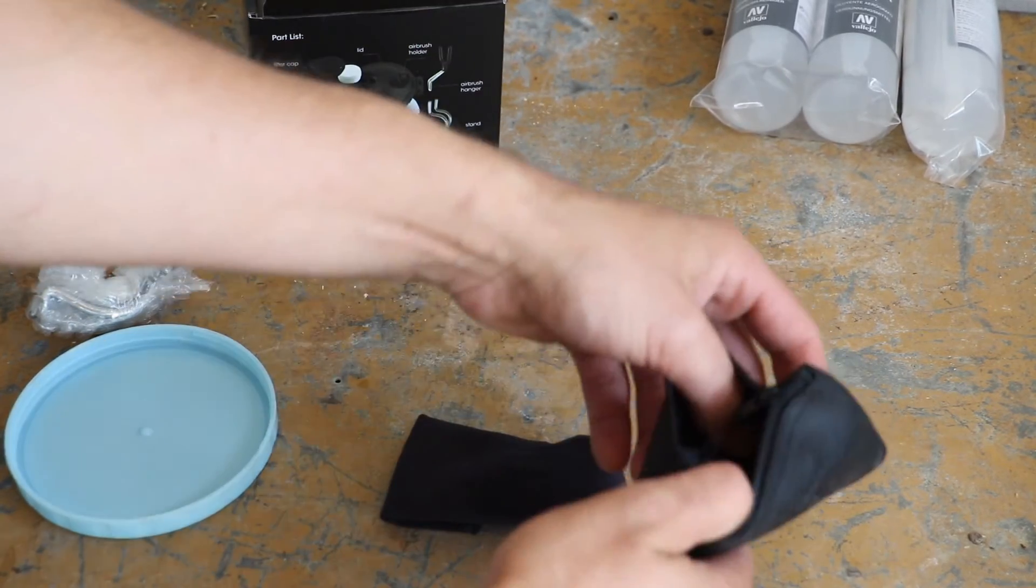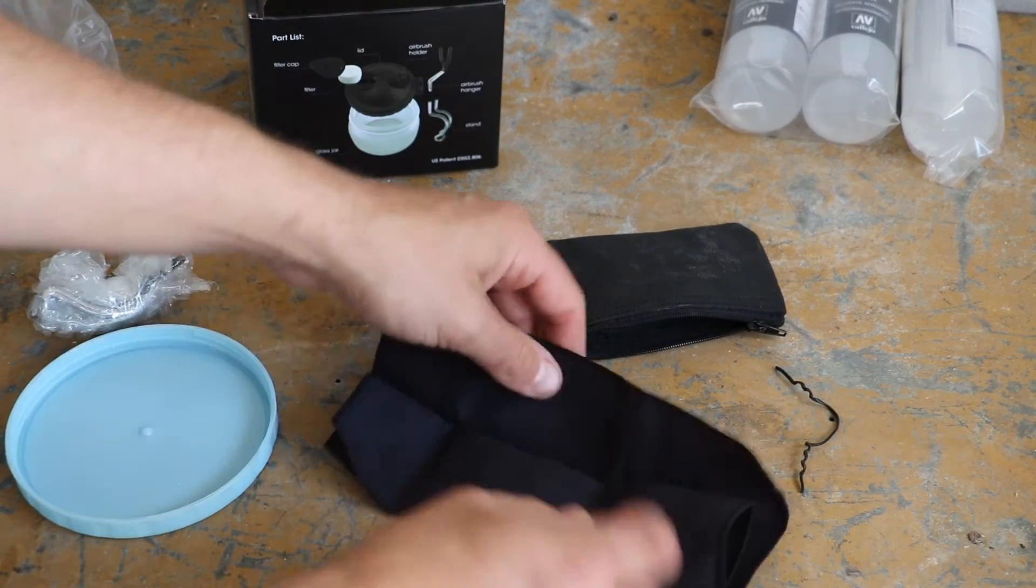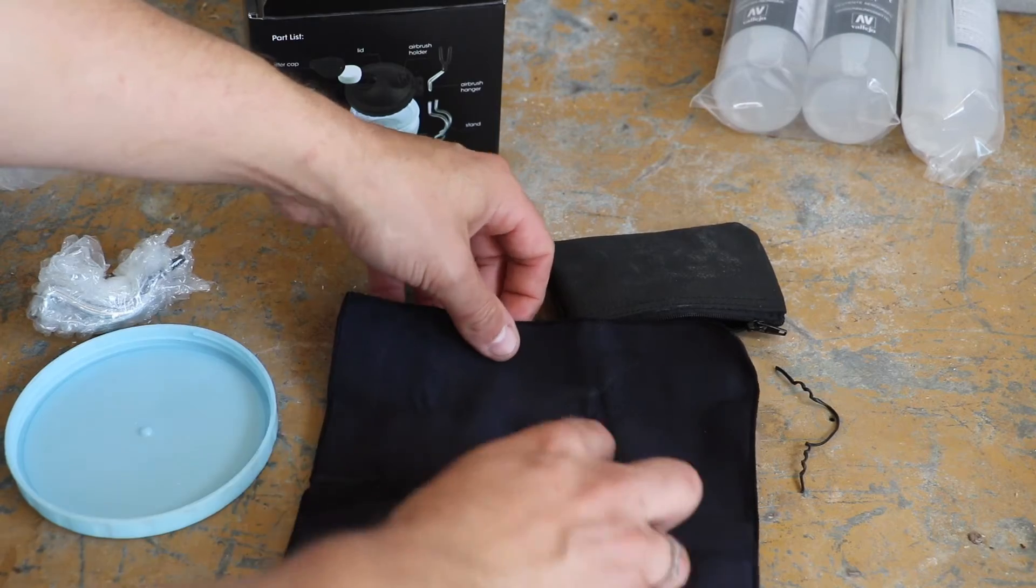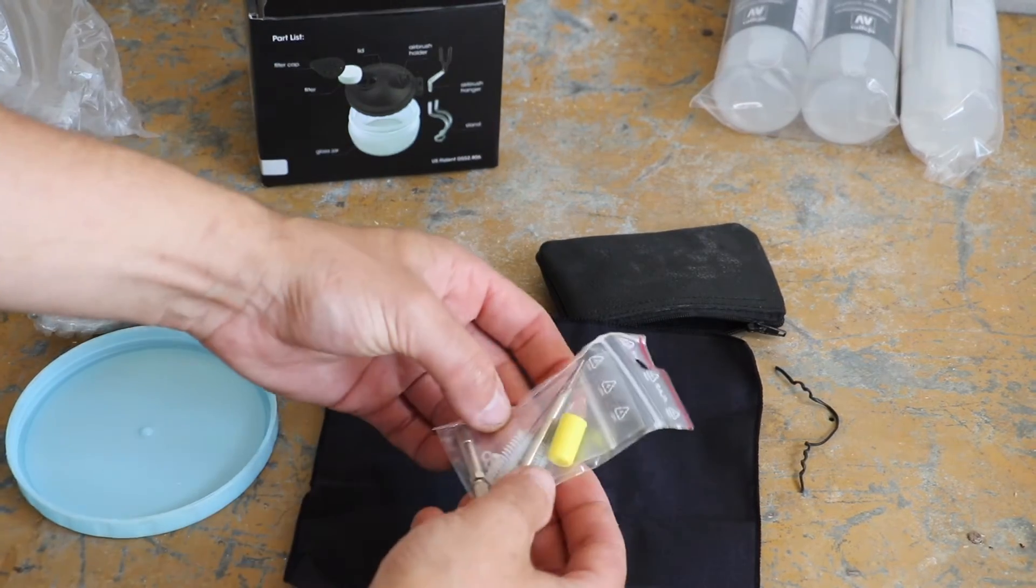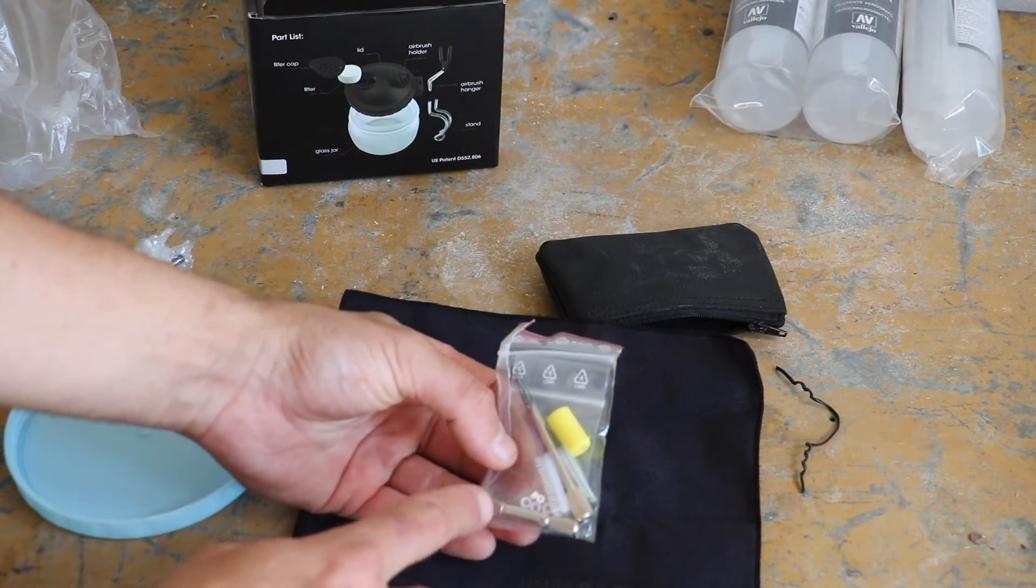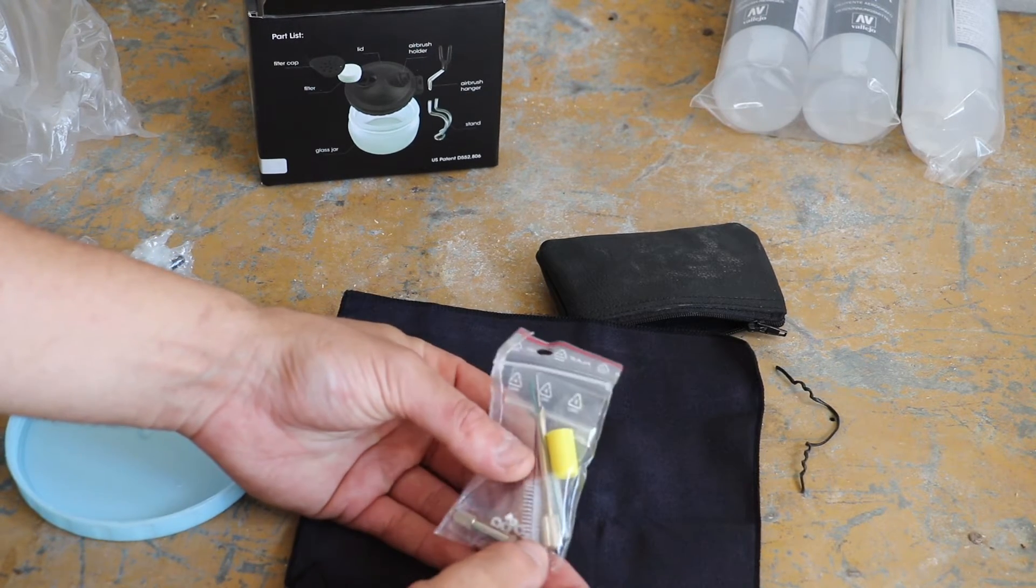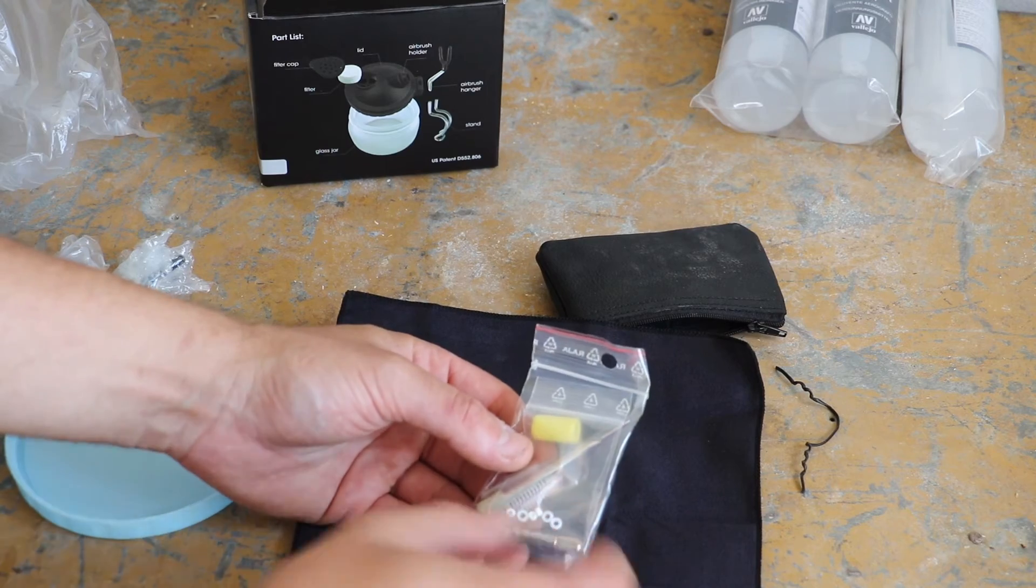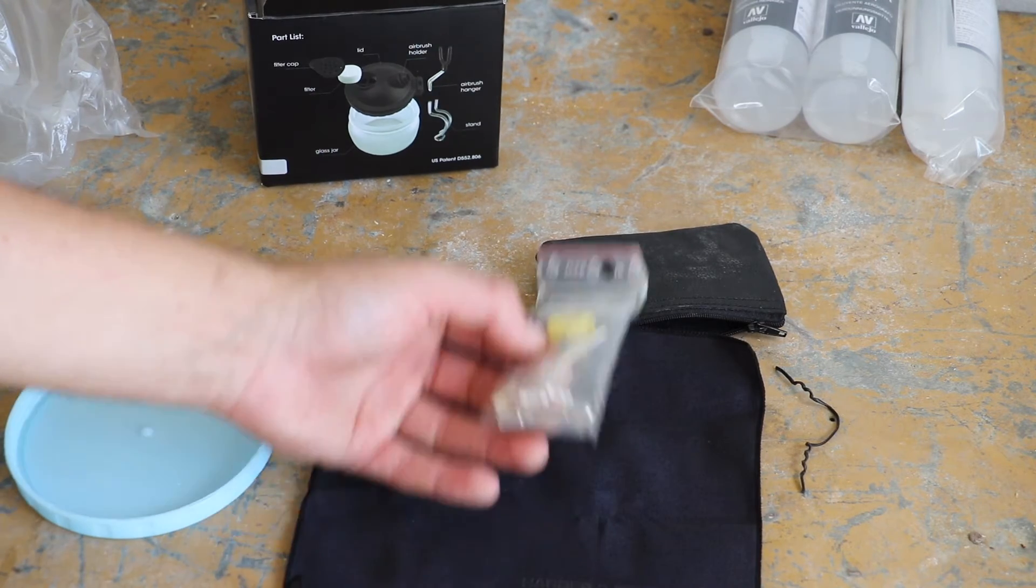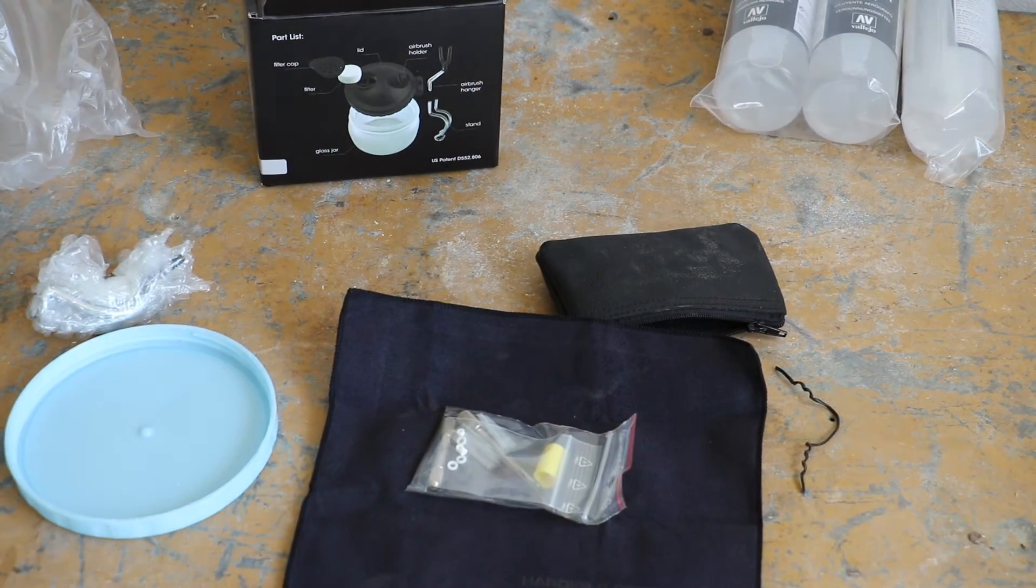This didn't I added this on this is a Harder and Steenbeck airbrush cleaning kit. So I have opened this once but not for a little while so we'll carefully fold it out and what we've got here are some little brushes, some little very fine brushes and a few other bits and pieces.